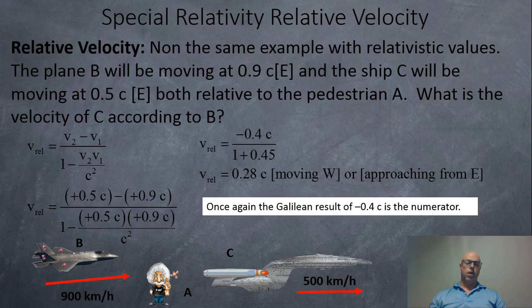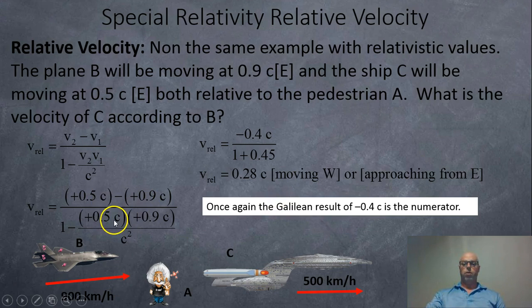Now let's try this relativistically. If we plug in our values this time, 0.5 subtract 0.9 over 0.5 times 0.9, we're going to get negative 0.4, just like we would with Galileo. But now divide it by 1 plus 0.45, and we get 0.28. So according to the observer in B, this ship here is approaching at 0.28 C.